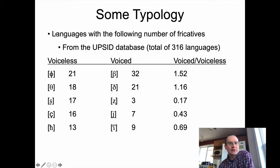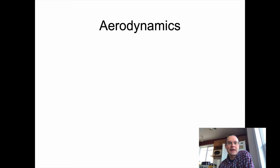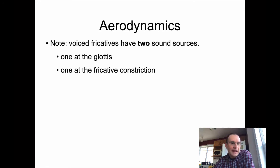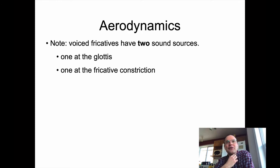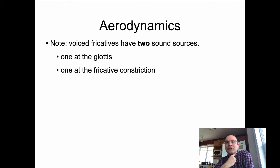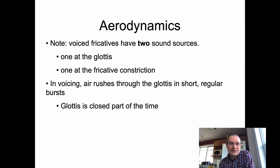So why do we get more voiceless fricatives than voiced fricatives? It's an aerodynamic answer. Voiced fricatives have to have two sound sources. They produce one sound source at the fricative constriction — like S, you can hear it at the alveolar ridge and teeth. And then there's a second sound source at the glottis when you vibrate the vocal folds. You can switch from S to a Z sound, and you can feel with your fingertips that second sound source appearing at your glottis. So a voiced fricative has two sound sources.